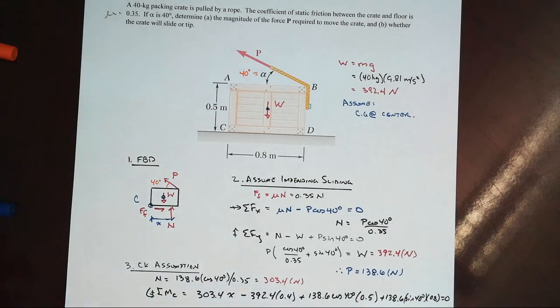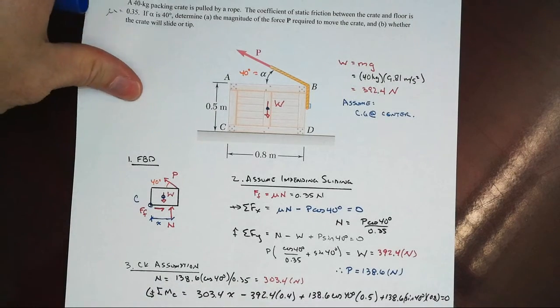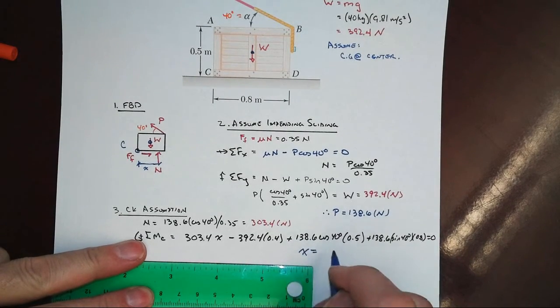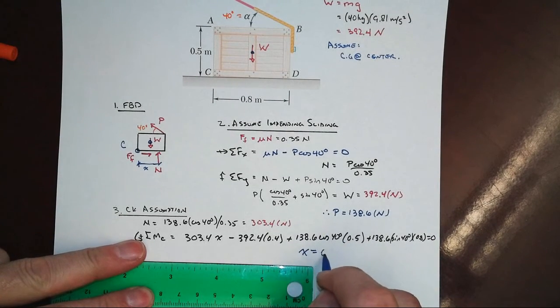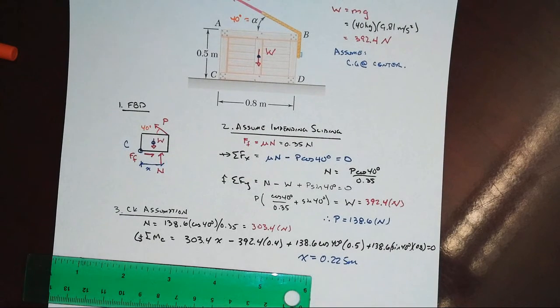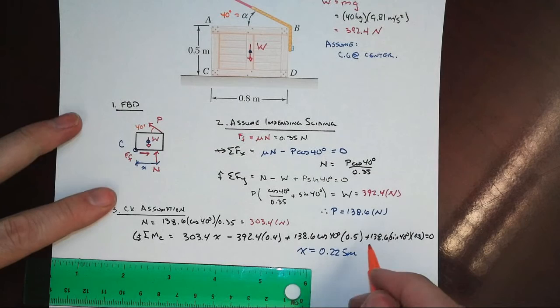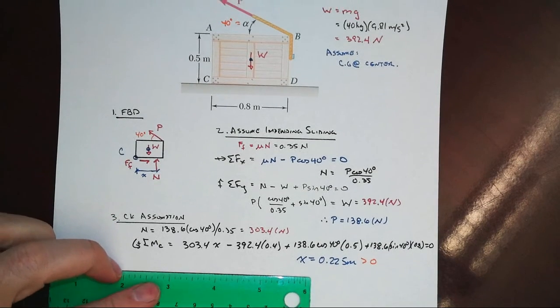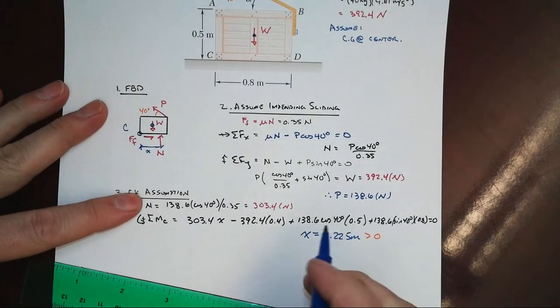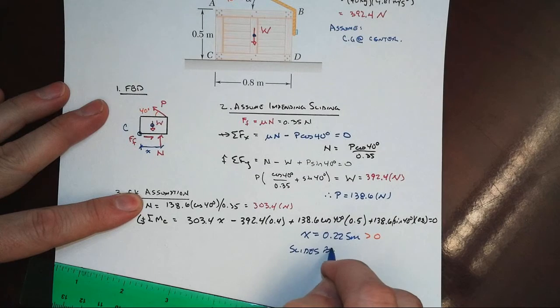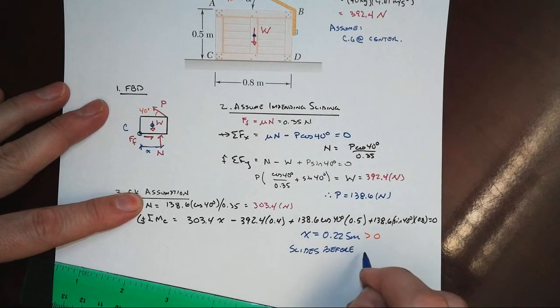And we will find out, if I've done the math correctly, that our value of x would equal 0.225 meters. That is greater than 0. And what that tells me is that it slides before rotating. And so our assumption was correct.